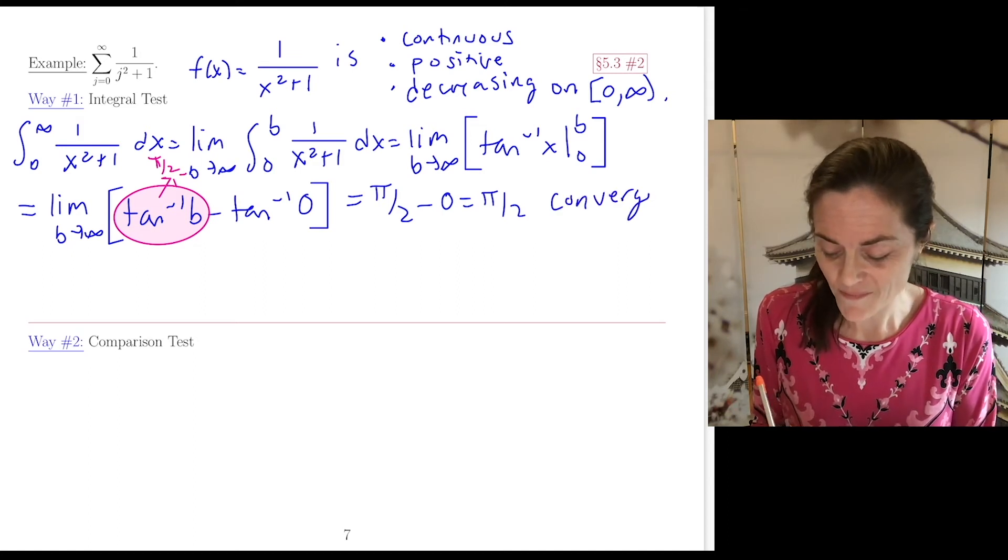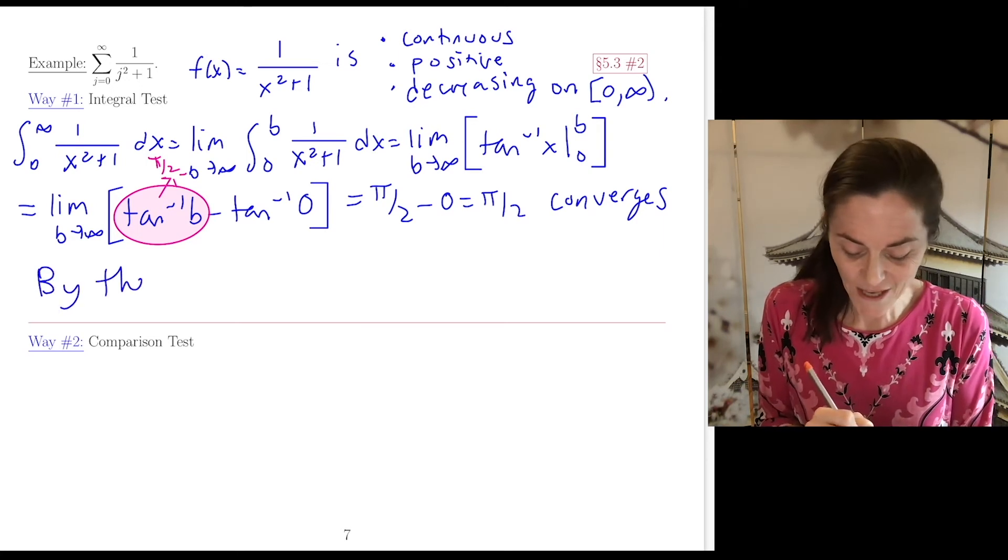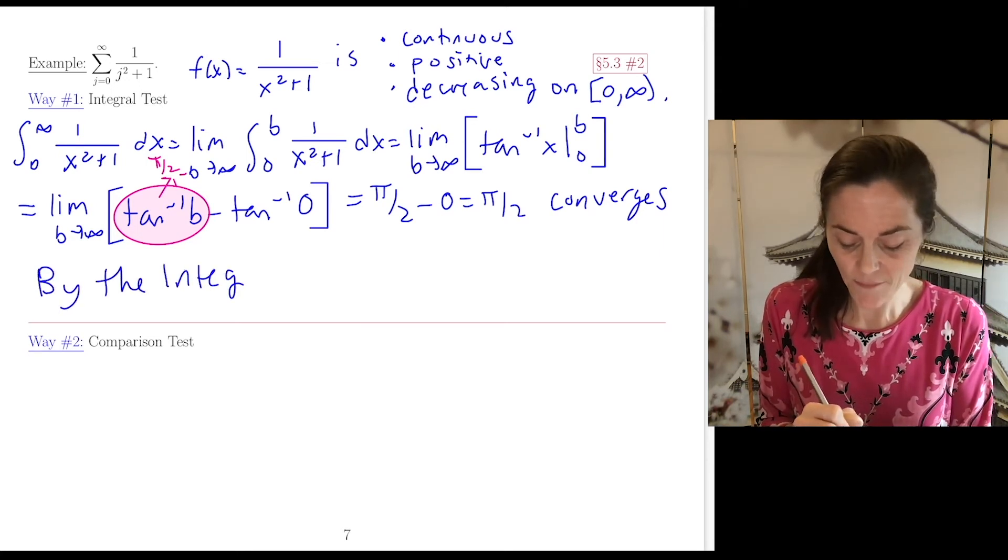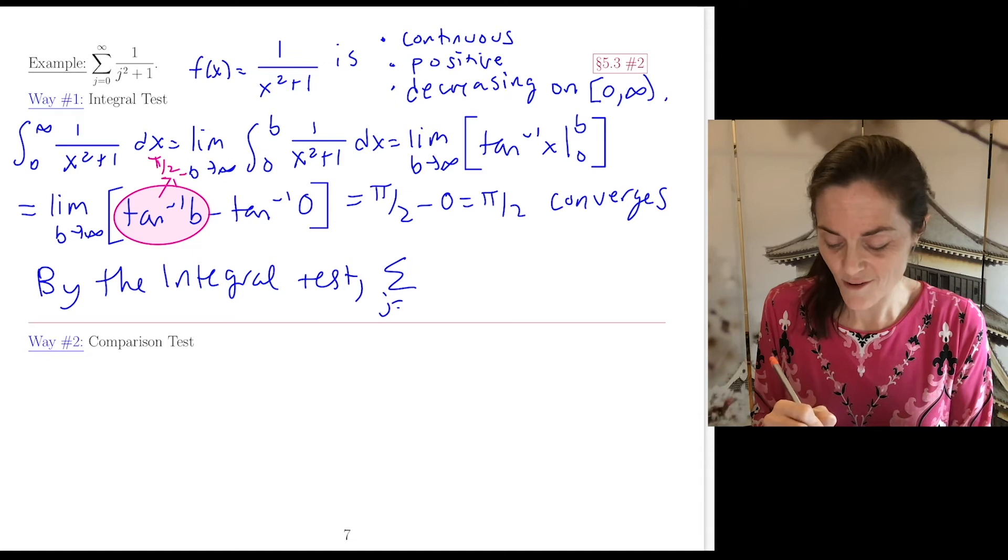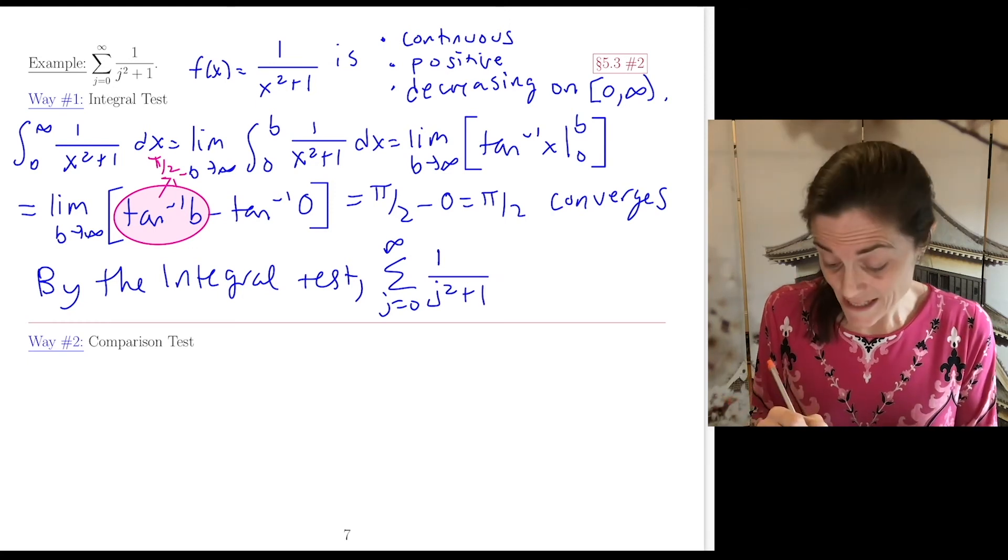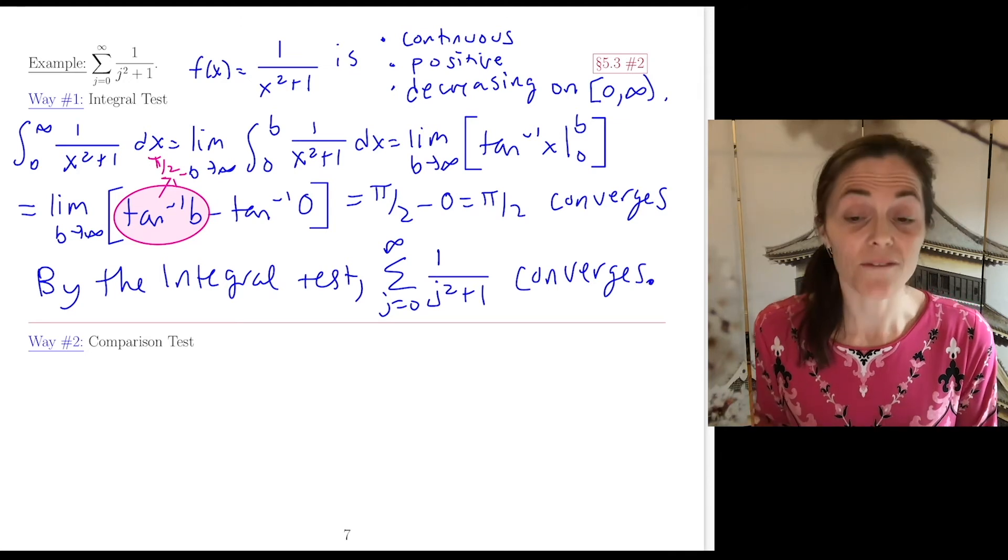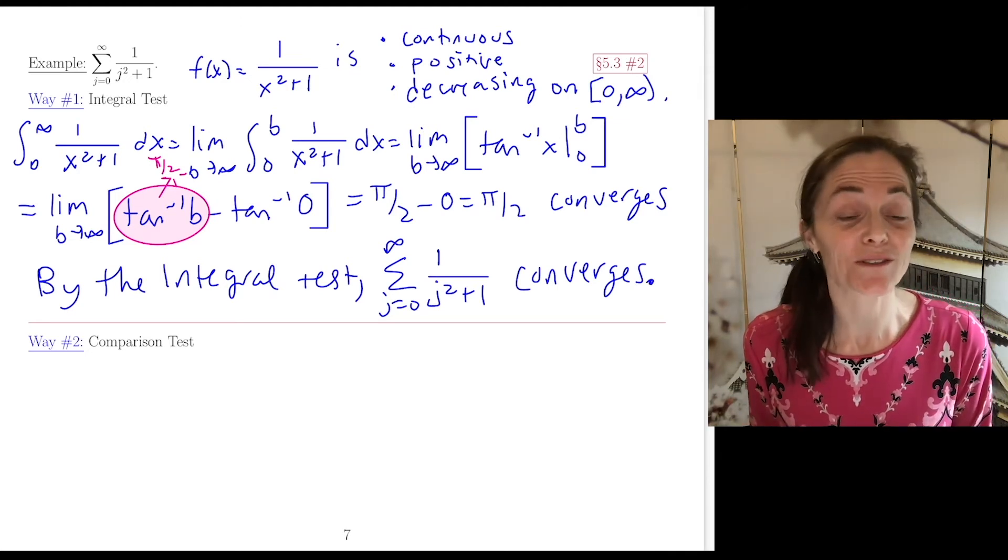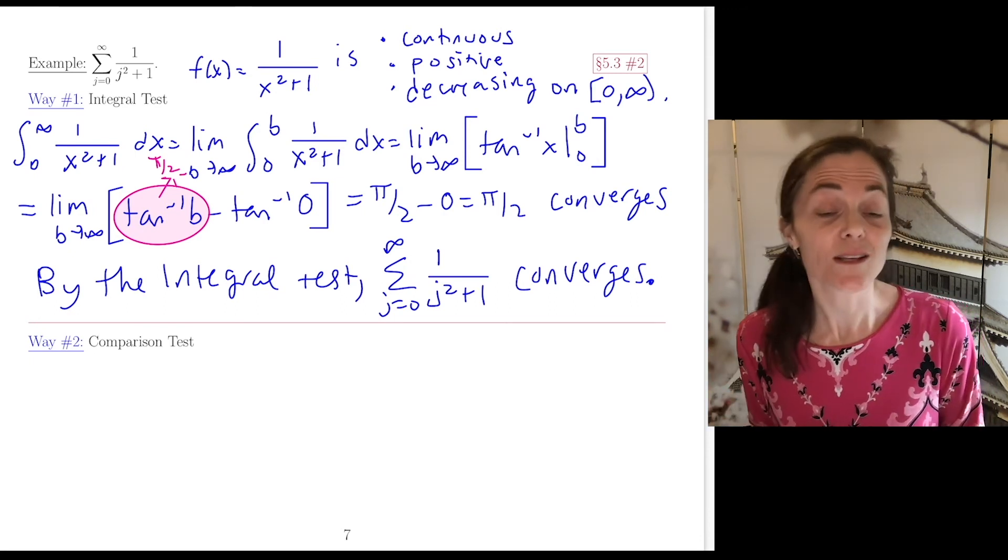Now we're ready to go back to the series. Using the integral test, the series Σ(j=0 to ∞) 1/(j²+1) converges. We do not know the value of the sum, but that's not our goal. The goal is to determine convergence or divergence. That was one way.